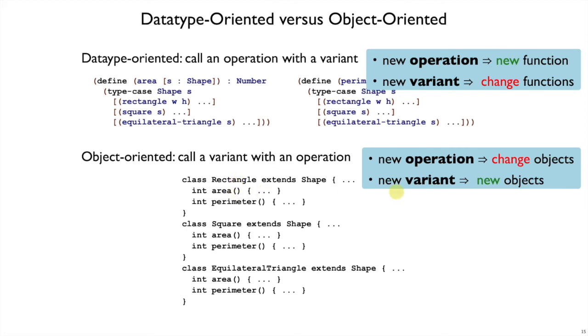On the other hand, if we add a new variant in the object-oriented world, then we don't have to change any of the old code. If we add a new circle variant of shape, then that would be a new class with the area and perimeter methods, and none of the old classes would have to change.